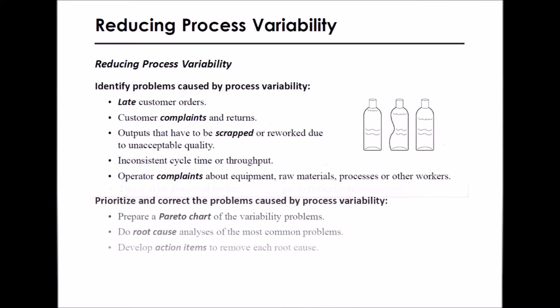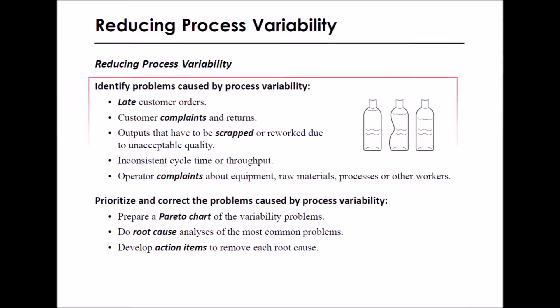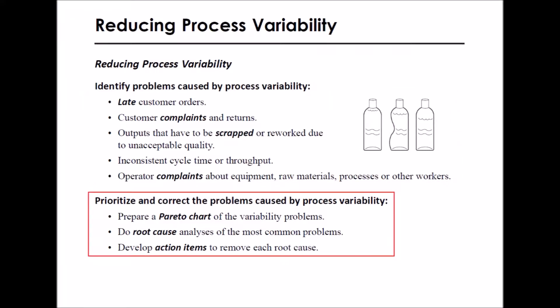One way to begin reducing process variability is to identify problems caused by process variability — problems such as late customer orders, customer complaints and returns, outputs that have to be scrapped or reworked due to unacceptable quality, inconsistent cycle time or throughput, or operator complaints about equipment, raw materials, processes, or other workers. Then correct the problems caused by process variability using Pareto charts, root cause analysis, and action items.